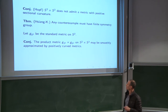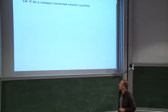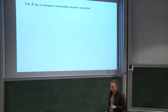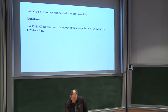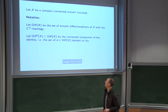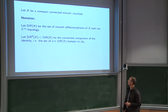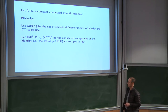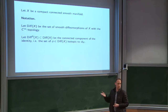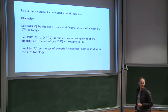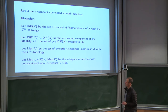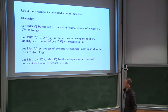Let me move on to the main subject of the talk, which is completely different. I'm going to be looking at smooth manifolds — X is a compact connected smooth manifold. Diff(X) is going to be the set of smooth diffeomorphisms with the C-infinity topology. Diff₀ is just the component of the identity — these are diffeomorphisms that are isotopic to the identity. Met(X) is my notation for the space of smooth Riemannian metrics with the C-infinity topology. And Met with subscript K≡C is the subspace of metrics with constant sectional curvature C, with the subspace topology.